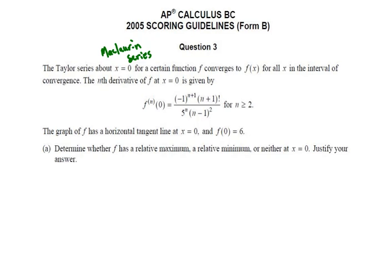The first thing we're asked to do is to determine whether f has a relative min, a relative max, or neither at x equals zero, and then justify our answer. The first thing we know is that derivative formula above works for n greater than or equal to two. So from the second derivative on, f(0) equals six is given, and based on the fact that we have a horizontal tangent line at x equals zero, we also know that f'(0) equals zero.